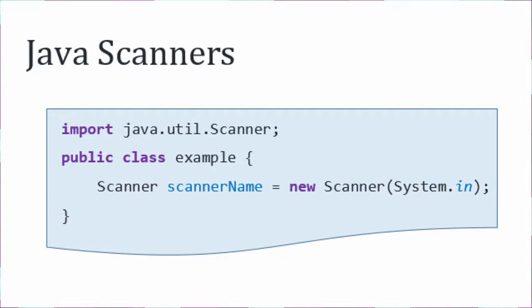Now we need to create an instance of the scanner class. If you think of a class as a cookie cutter, then an instance of the class is a cookie itself. You can do this by adding this code.